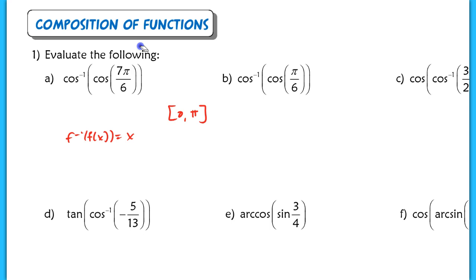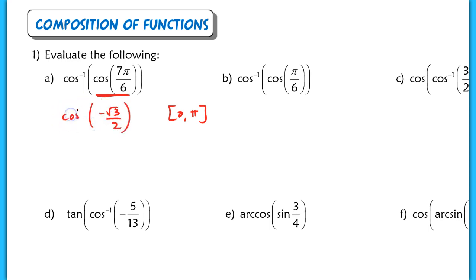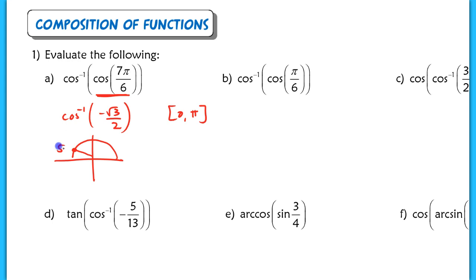What we're going to do is take a look at the cosine of 7π/6, because this is a defined value. The cosine of 7π/6 is negative √3/2. So now the question is: what angle measure gives me a cosine value of negative √3/2 that falls within 0 to π? That value has to fall between 0 and π, and it's going to be the π/6 family, which makes that 5π/6.